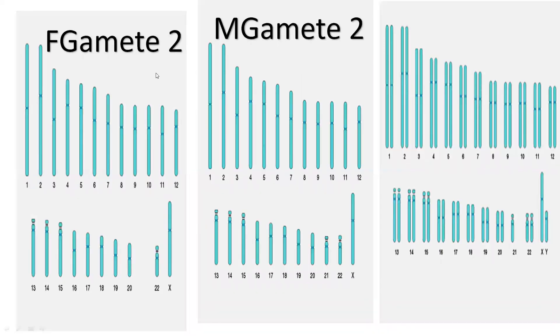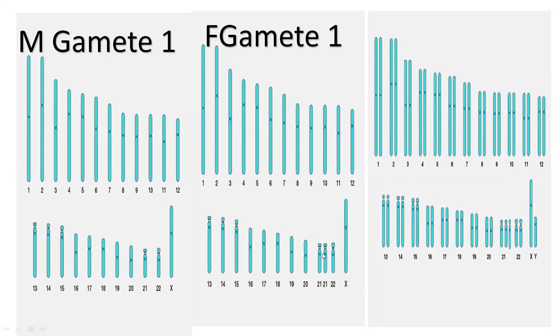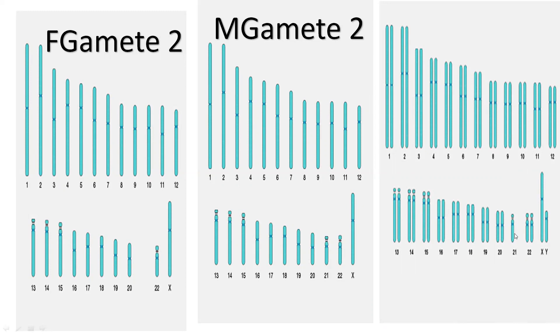Now the other case: female Gamete 2 and male Gamete 2 (normal). In female Gamete 2, there is no 21st pair of chromosome, whereas the male has only one 21st chromosome — so only one chromosome on the 21st pair — making the total number of chromosomes 45. This happens because chromosomes do not separate during gamete formation. Sometimes X and Y will also stay joined together. The case with 47 is called trisomy, and the case with 45 is called monosomy.